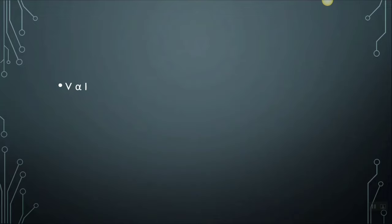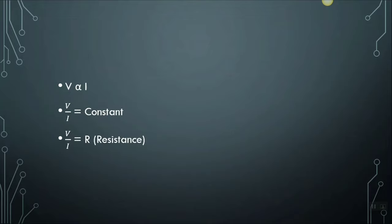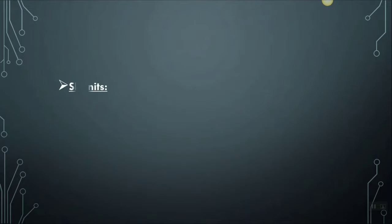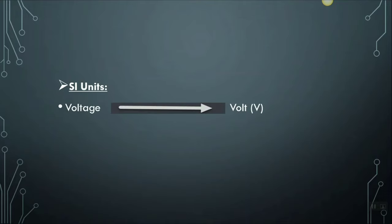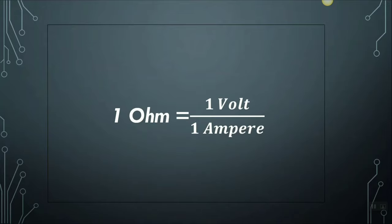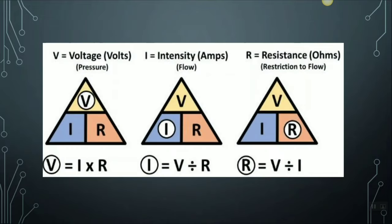If V is directly proportional to I, it also means that V over I is constant, and that constant is nothing but R, or the resistance. So what is resistance? It is simply the property of the conductor to resist the flow of charges through it. The SI unit of voltage is volt and of current is ampere. The SI unit of resistance is ohm, represented by the Greek letter omega. If the potential difference across two ends of a conductor is 1 volt and the current flowing through it is 1 ampere, then the resistance of the conductor will be 1 ohm. Ohm's law is a simple formula that explains the relationship between voltage, resistance, and current.